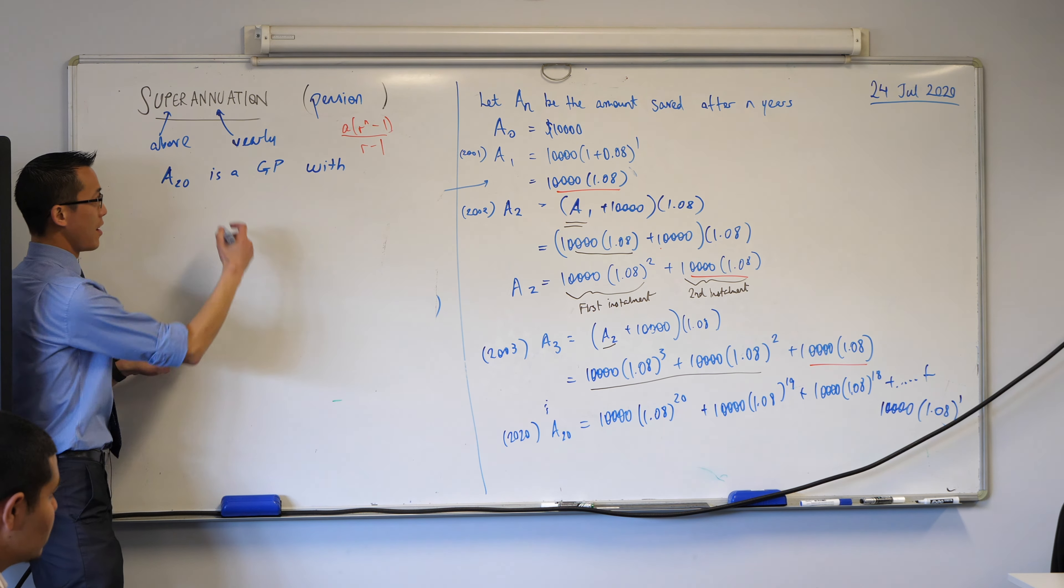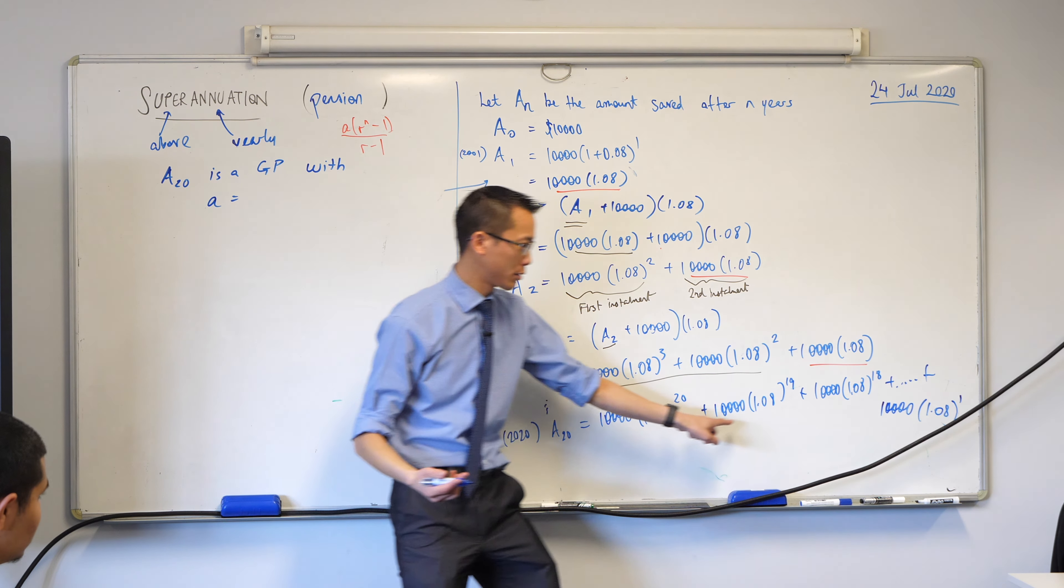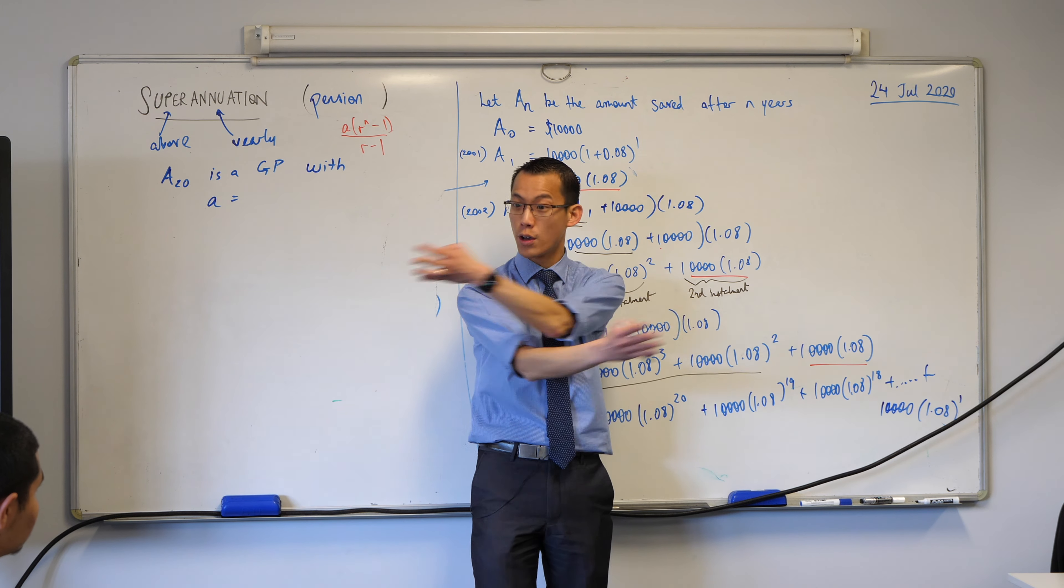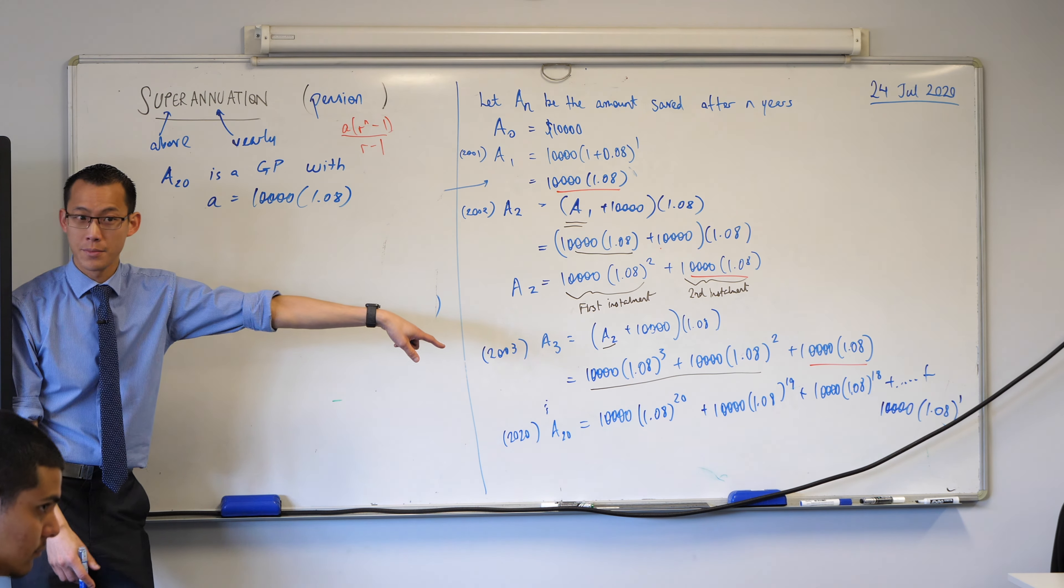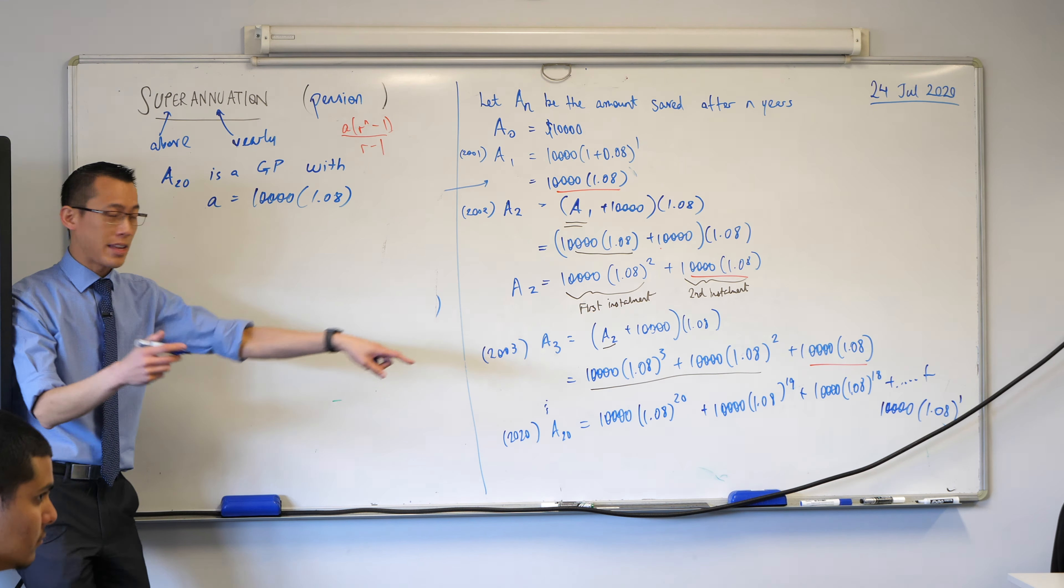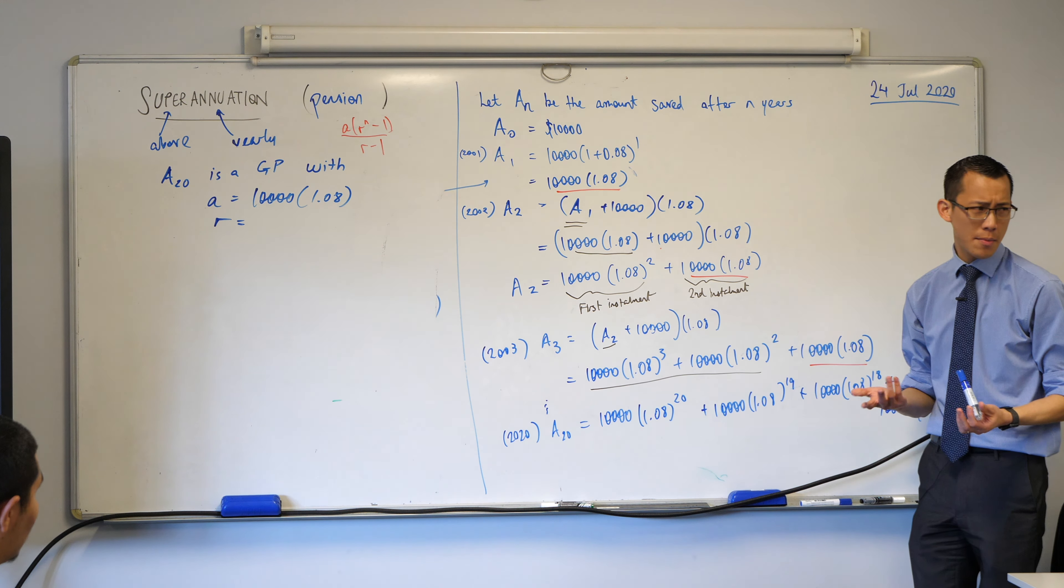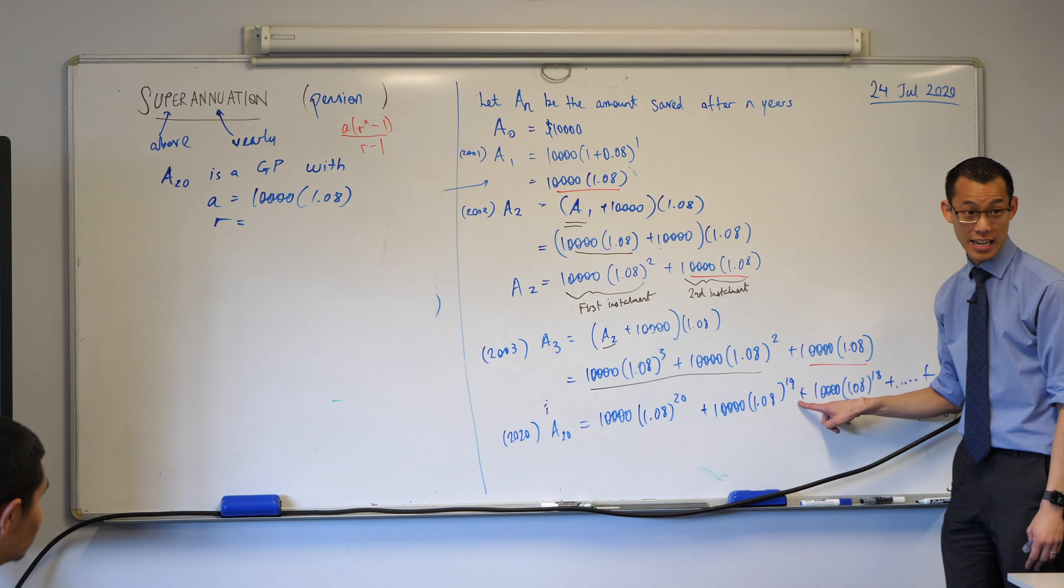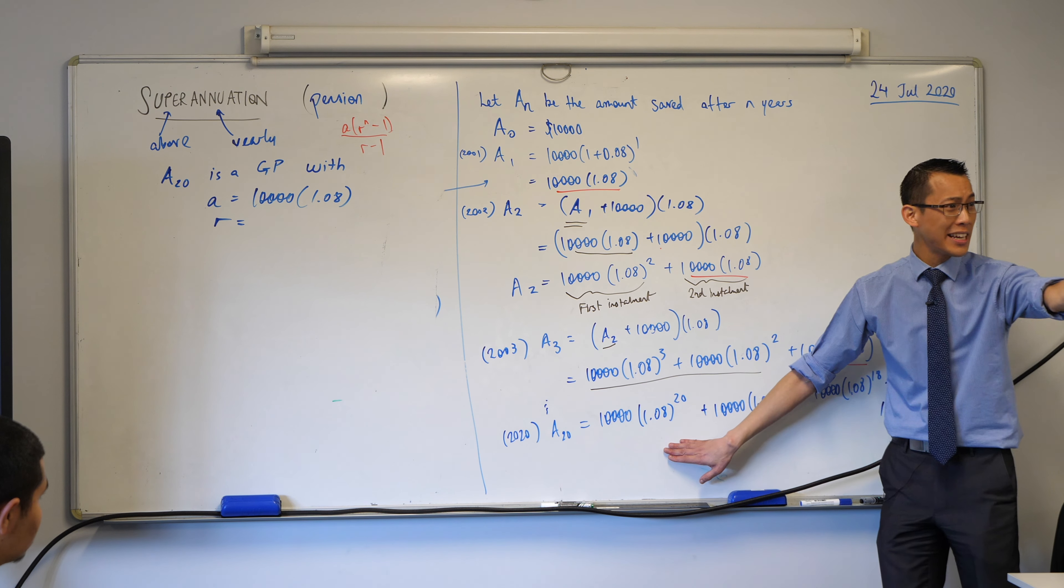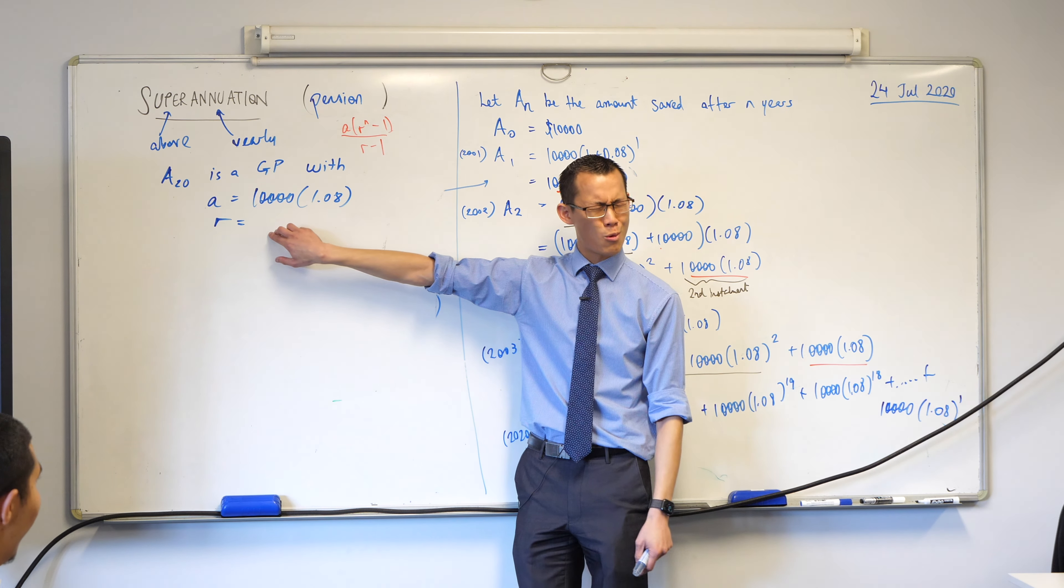Now, I'm going to do something a bit unusual. I'm going to say a, rather than it being what I physically wrote first, which is this guy, I'm actually going to say it's this guy over here. I could just write the whole series in reverse order. You'll see in a second why that's so useful to me. I'm going to say it's 10,000 times 1.08. That's the last one that I wrote down. The reason why that's useful to me is, now when I write down my common ratio, if I were to go from here forward, what am I doing to get from one term to the next? I'm actually dividing by 1.08.